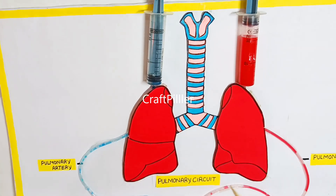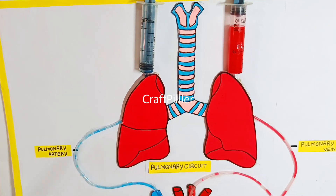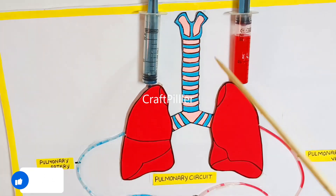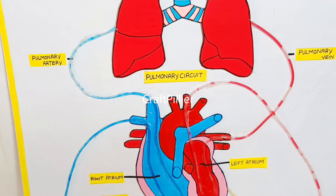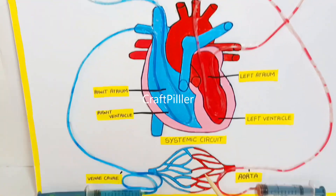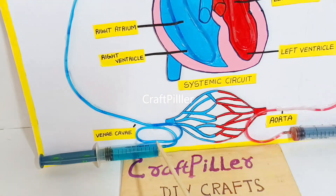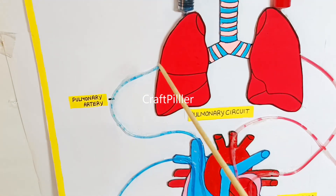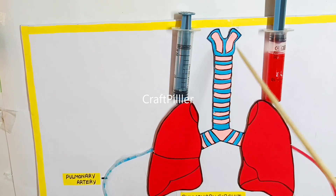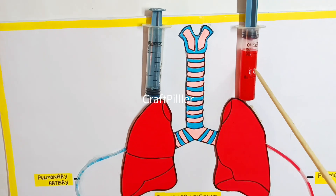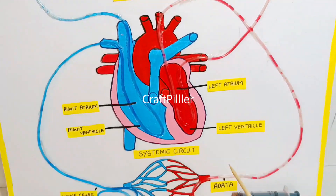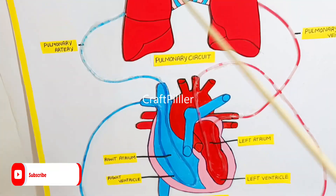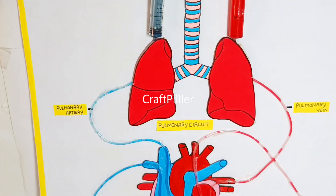Now let us demonstrate how this human circulatory system really works by using simple syringes. We have used syringes to depict the human circulatory system. We are going to pump the deoxygenated blood from the body to the heart, then from the heart to the lungs, and the oxygenated blood moves back to the heart and to the various parts of the body.